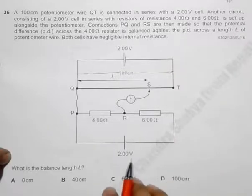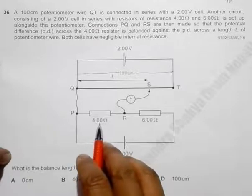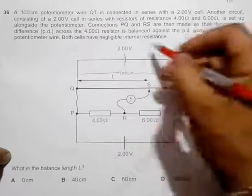And we have another circuit which has got again a 2 volt cell in series with resistances 4.00 ohm and 6.00 ohm, so we have one circuit here and one circuit here.